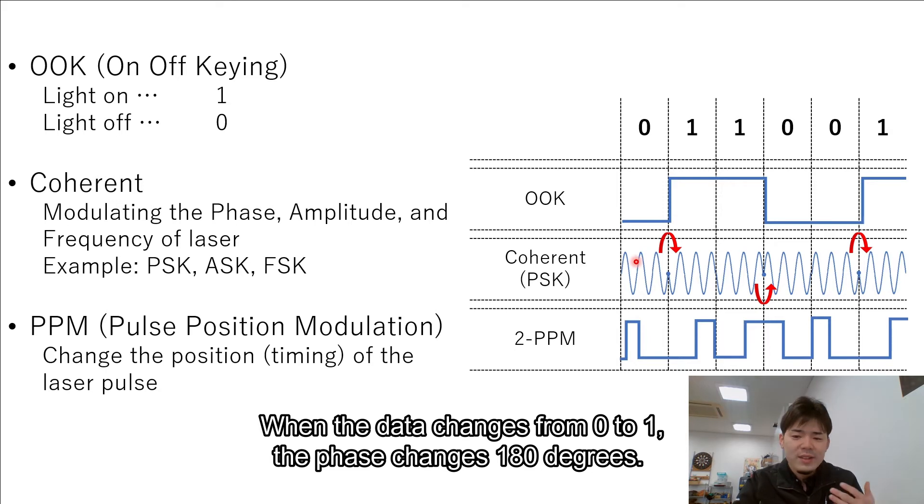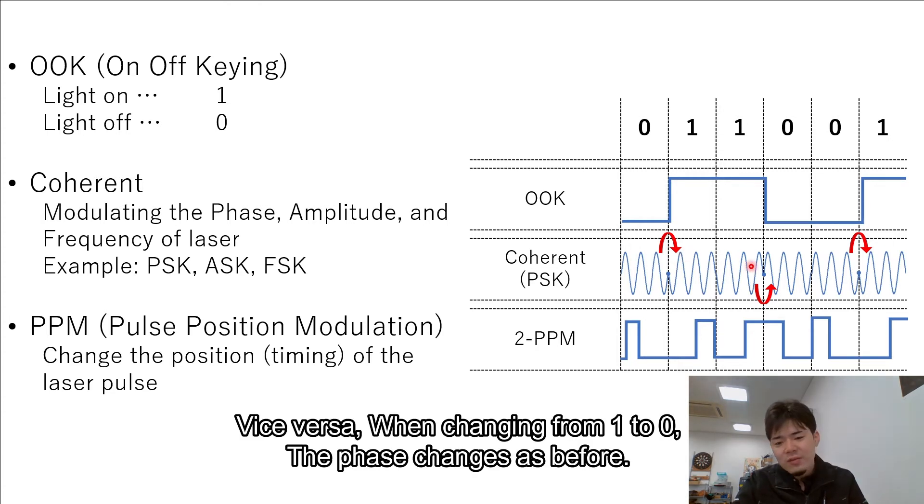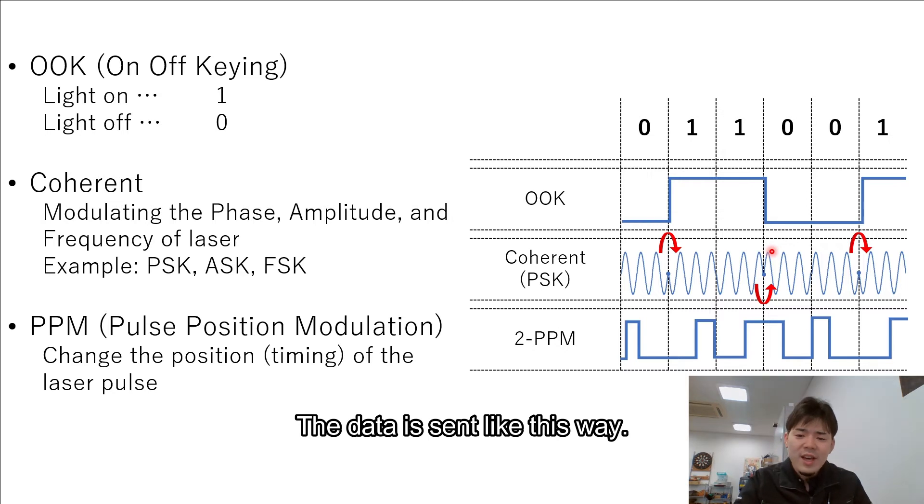For example, when the data changes from 0 to 1, the phase changes 180 degrees. Vice versa, when the data are changing from 1 to 0, the phase changes as before. The data is sent like this way.